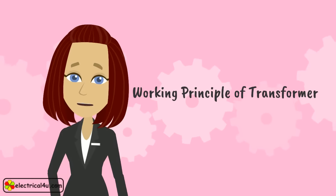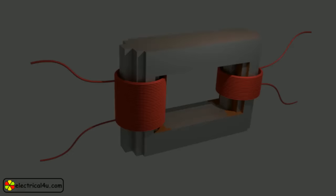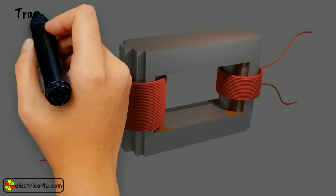The Working Principle of Transformer. A transformer is a machine, but it does not have any moving part. That is why a transformer is referred to as a static machine.